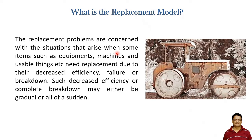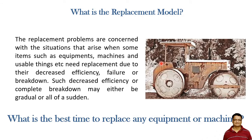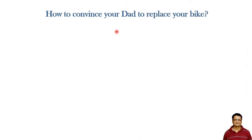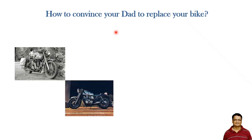So what exactly is a replacement model? Usually when there are certain machines or equipment that we use, after some period of time their efficiency decreases, or they fail, or there are certain breakdowns frequently. In such cases we think of replacing that particular equipment with a new one. But what is the best time to replace any equipment or machine? Can we do it with some scientific method? That method is called a replacement model.